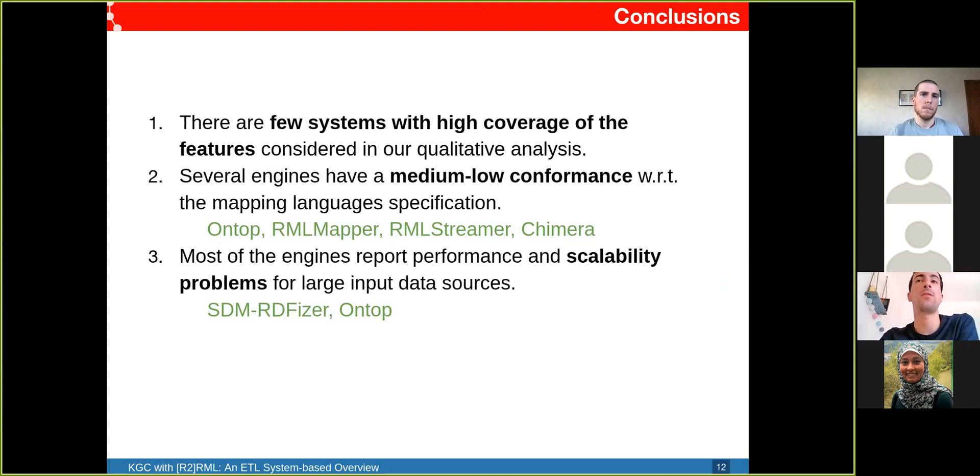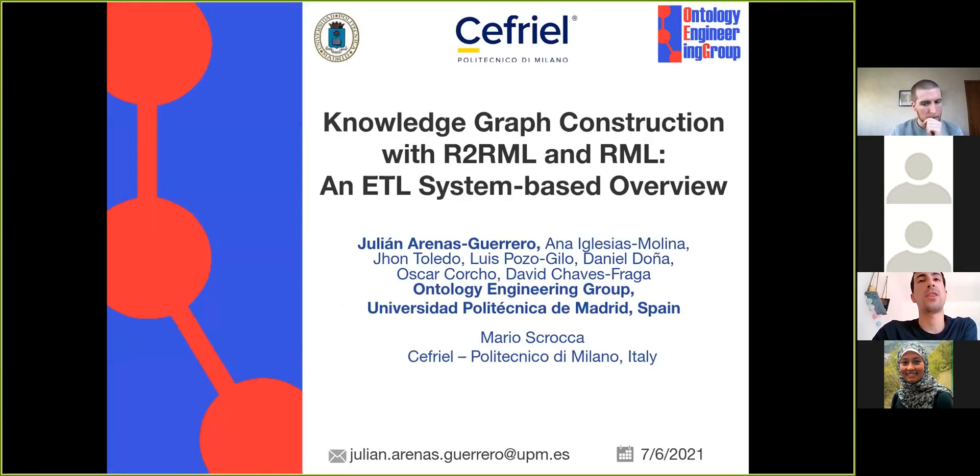To summarize, there are a few systems with high coverage of the qualitative features we considered in our analysis. Most engines have medium to low conformance with the mapping language specifications, but some stand out like OnTop, RML Mapper, RML Streamer, and Chimera. Most engines report performance scalability problems. No engine is able to materialize GTFS for scaling factor 1000, which is like 80 gigabytes of knowledge graph, but the ones with better performance both in memory and execution time were SDM-RDFizer. Thank you for your attention.